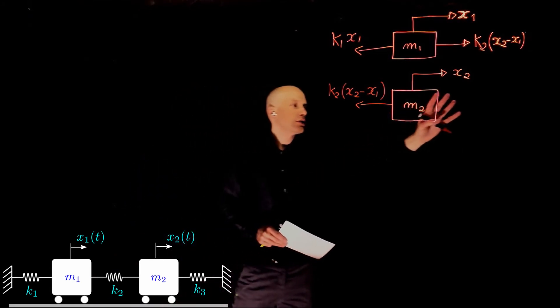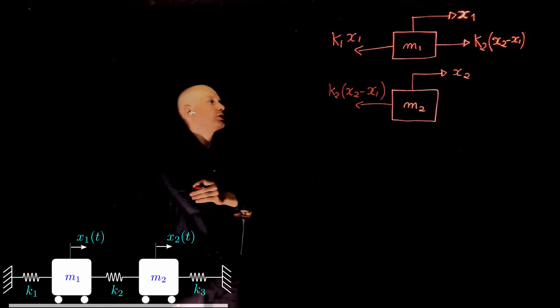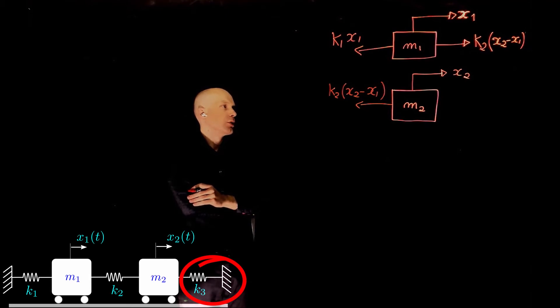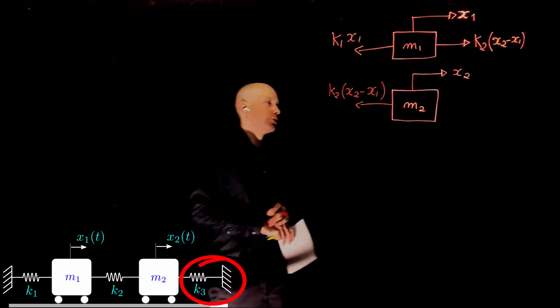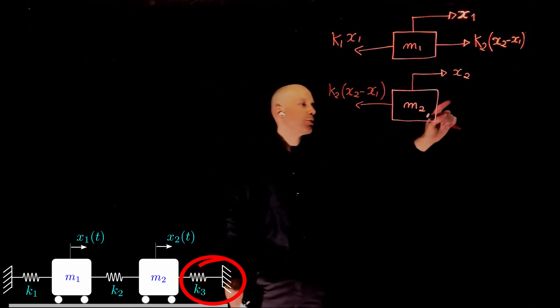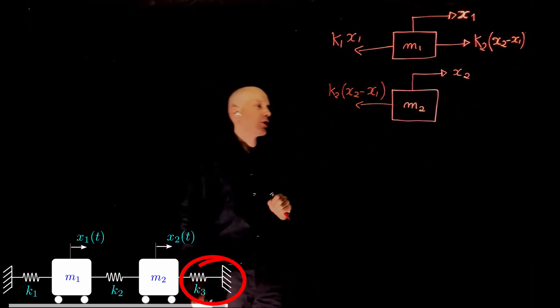Okay, now let's look at this side of m2. What is happening there? If m2 now moves to the right, we see that there is a spring connecting m2 to a fixed reference frame.